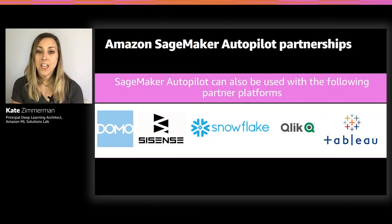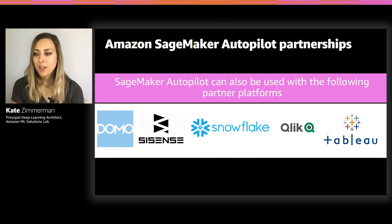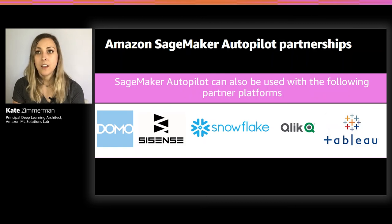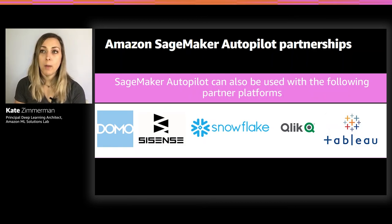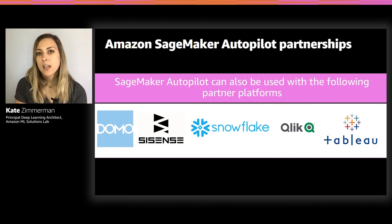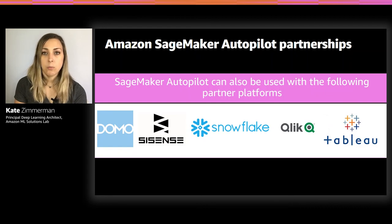In addition to using Amazon SageMaker within the AWS console, there are several Amazon SageMaker Autopilot partnerships. For example, you can analyze your data in Domo, and when you use the AutoML model creation feature within Domo, under the hood it's using Autopilot to create a prediction model for you. This slide lists partners who have Autopilot integration built into their platforms.